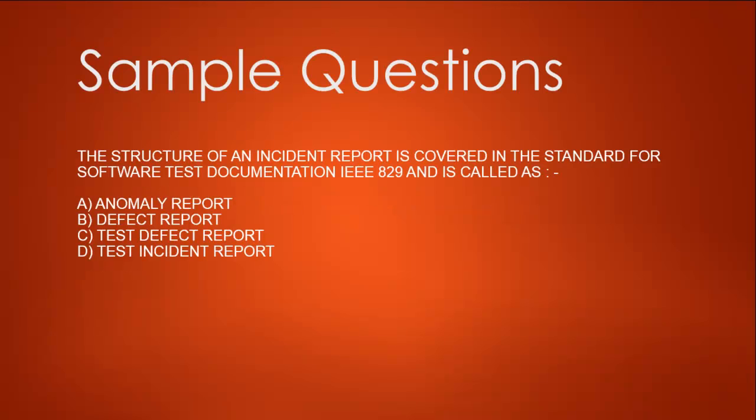First question: The structure of an incident report is covered in the standard for software test documentation IEEE 829 and is called as: Option 1, Anomaly Report; second, Defect Report; third, Test Defect Report; fourth, Test Incident Report.